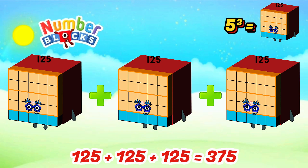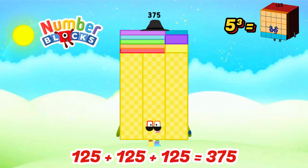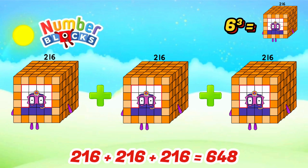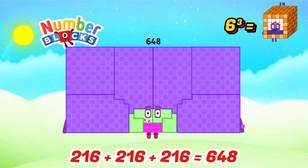Cube of 5 is 125. When we add 125 three times, the answer is 375. Amazing! Cube of 6 is 216. When we add 216 three times, the answer is 648. Amazing!